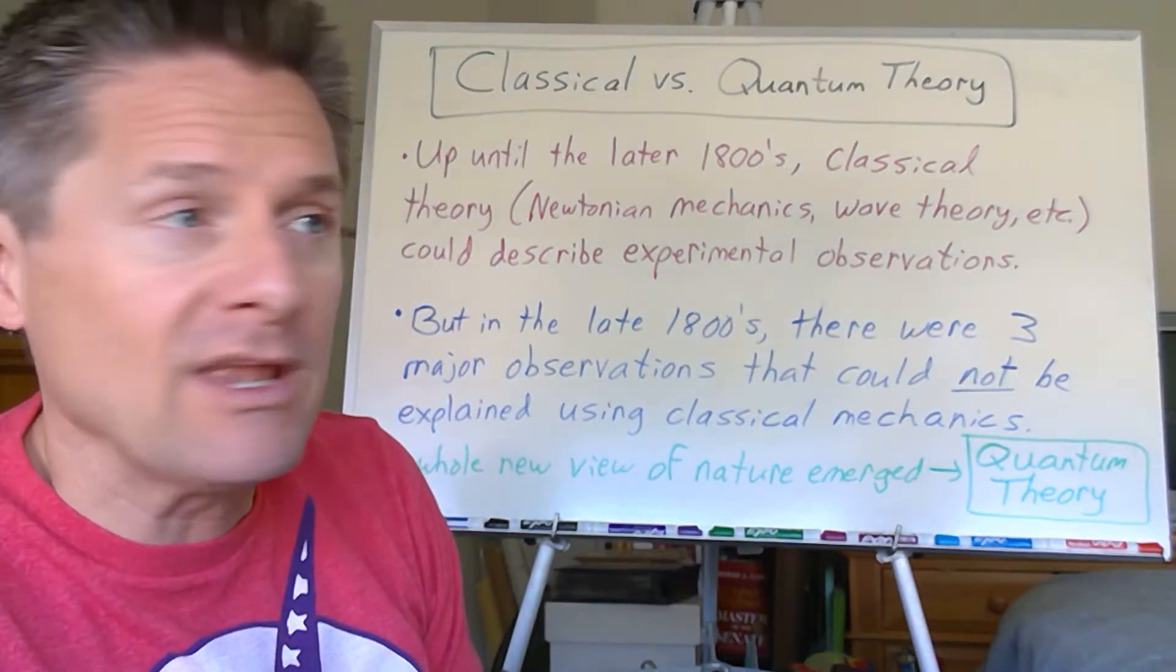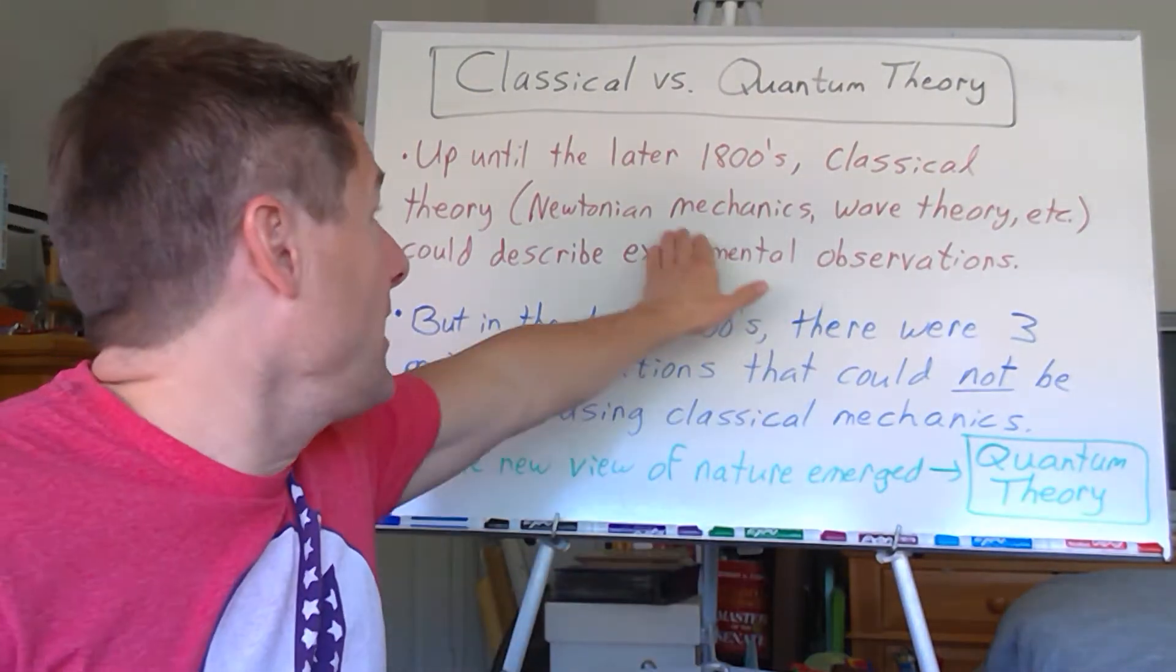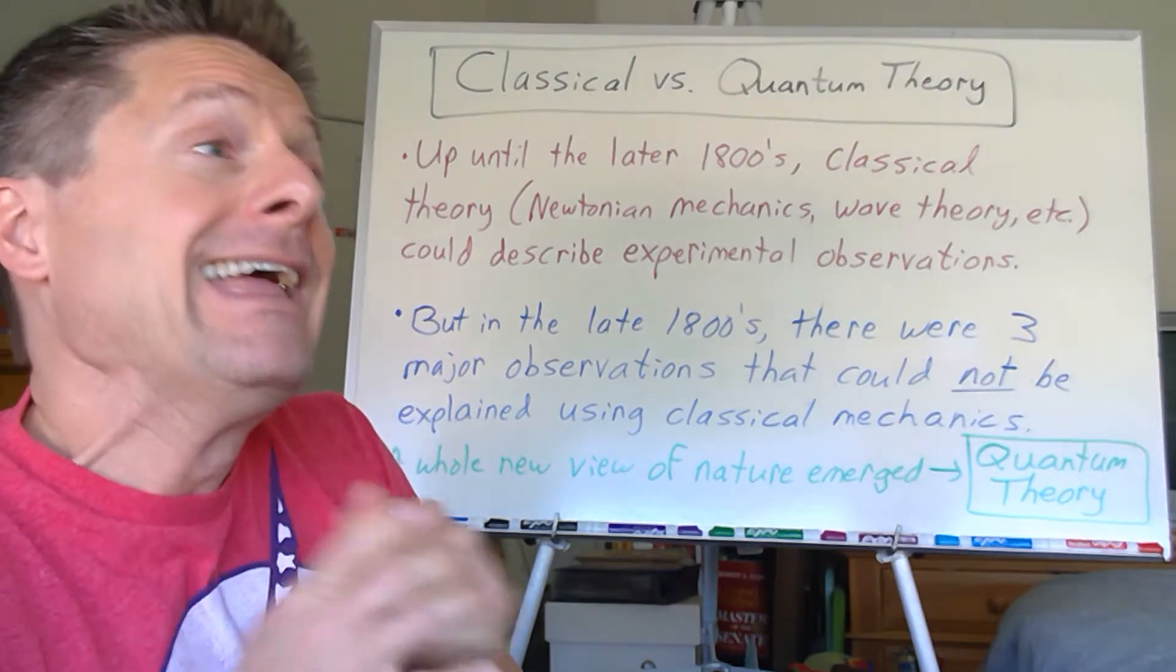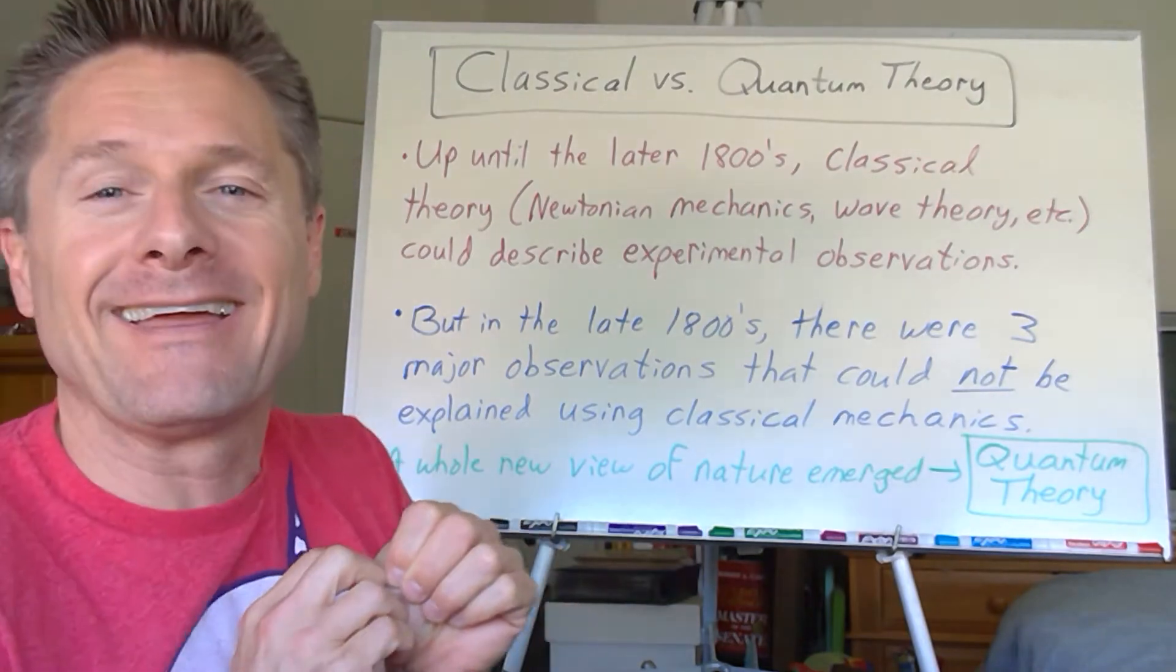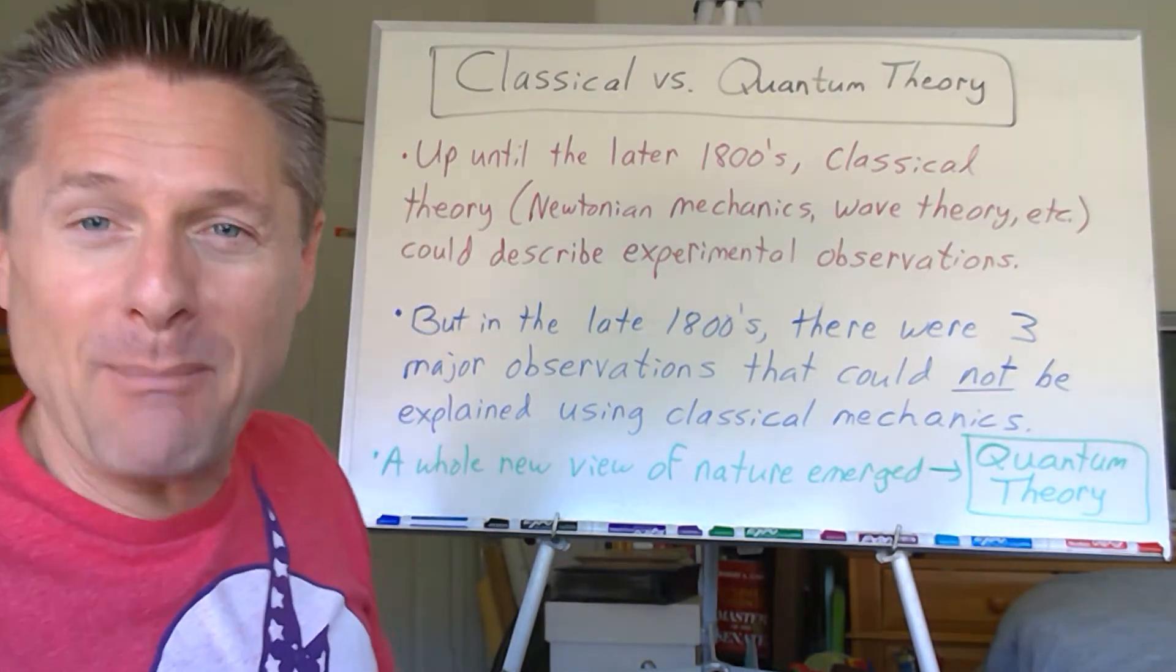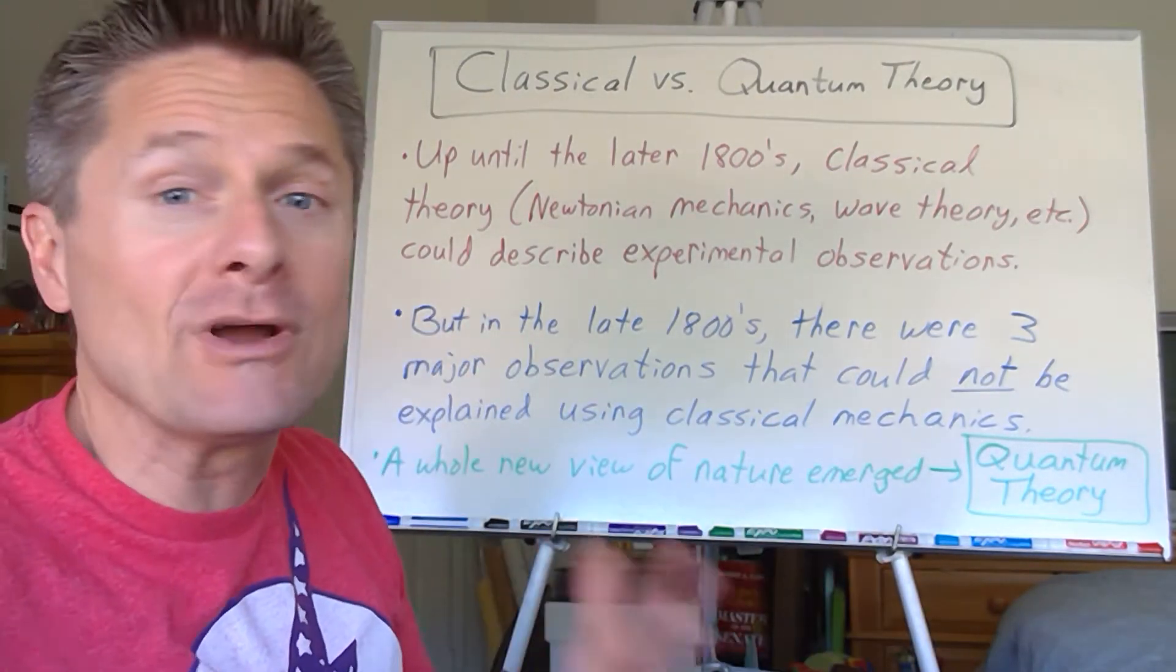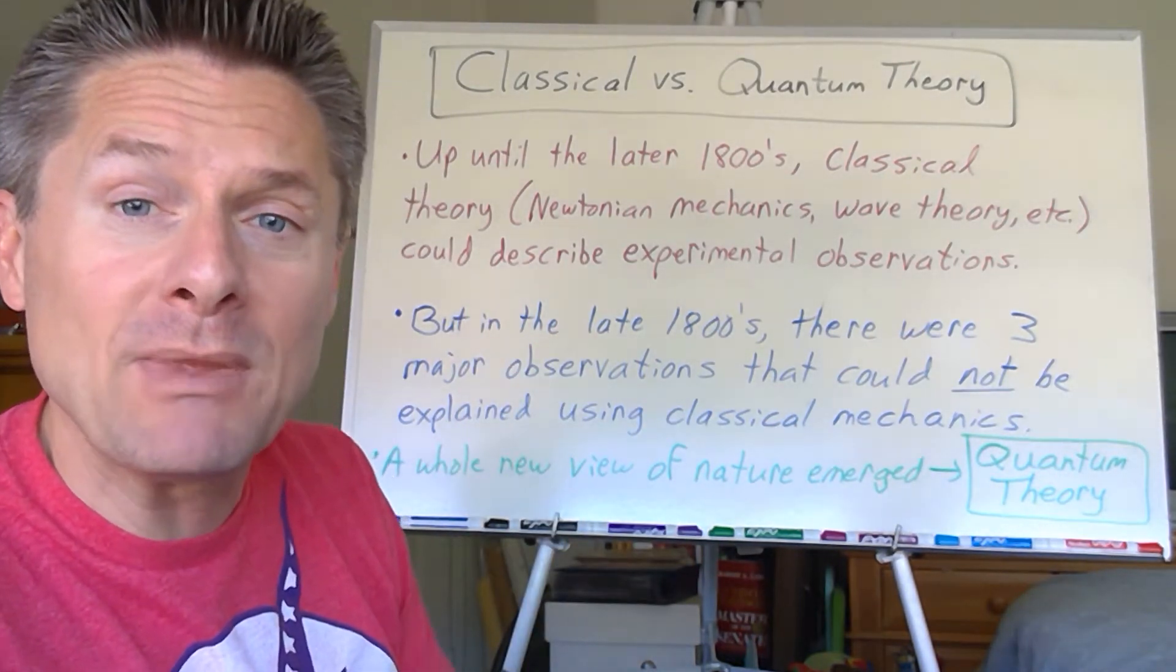Because they could explain everything. All of the experimental observations that have been seen could be theoretically explained using classical theory. We talked about wave behavior, Newtonian mechanics, Newton's laws. We could explain all of the stuff we observed. Everything was good and everybody was happy at the party. And then three people showed up at the party and ruined it for everybody.